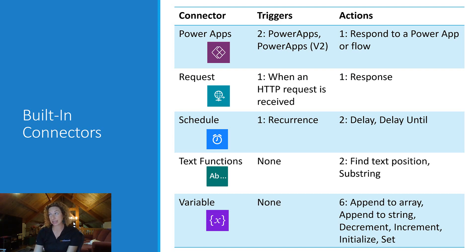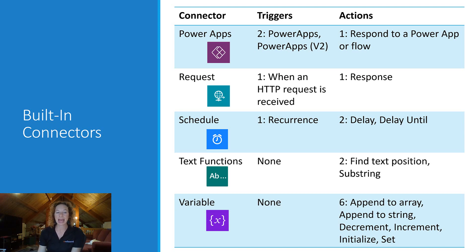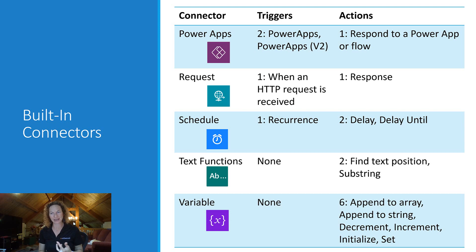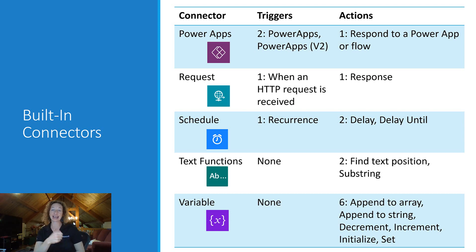Text Functions has no triggers. Your actions are Find Text Position and Substring. And Variables — these are cool too. No triggers for variables, but you can use the Variable connector to Append to Array, Append to String, Decrement, Increment, Initialize, and Set. I use this a lot for Set Variable.